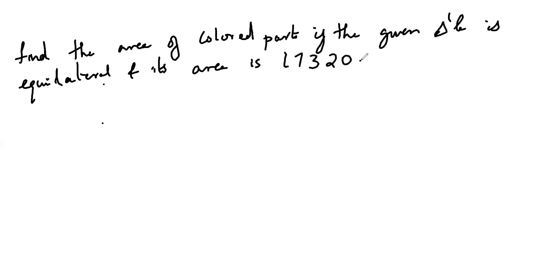Find the area of colored part if the given triangle is equilateral and its area is 17320.5 centimeter square.